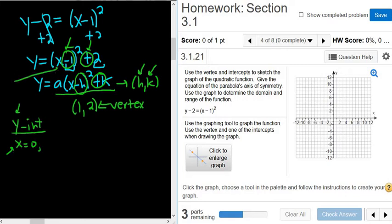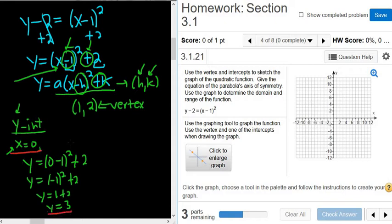So we're just going to plug in 0 here for x. So we get y equals 0 minus 1 squared plus 2. So you get y equals negative 1 squared plus 2. Negative 1 squared is 1, so you get 1 plus 2. So we end up with 3. So when x is equal to 0, we get y equals 3. So our y-intercept is (0, 3).